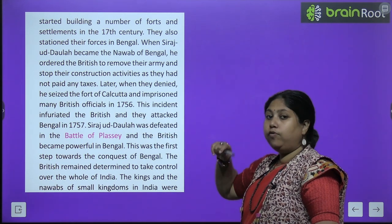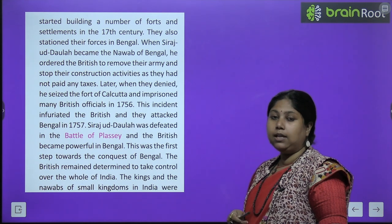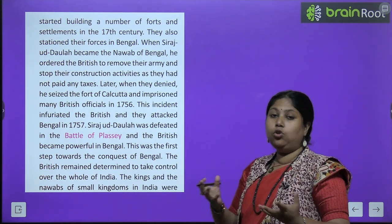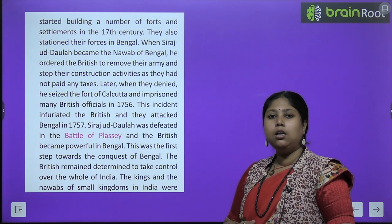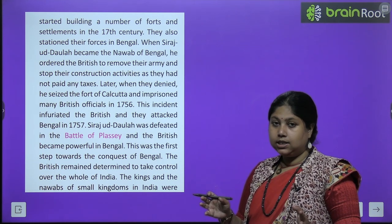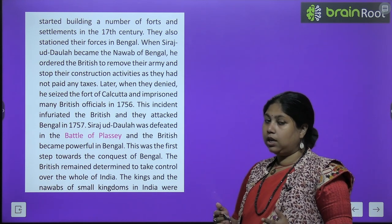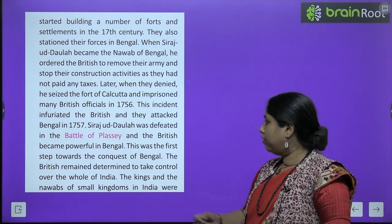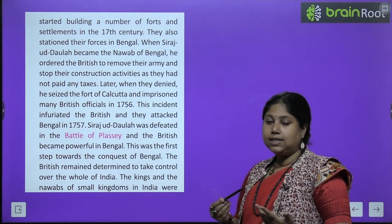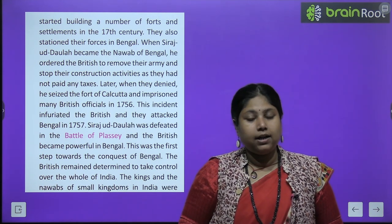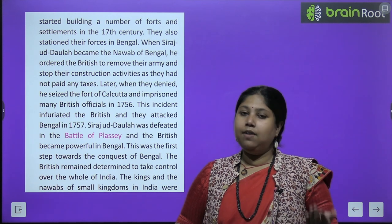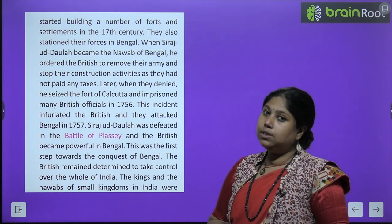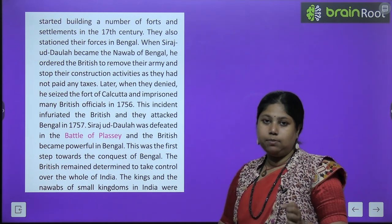Siraj ud-Daulah seized the fort the British were constructing and jailed those who disobeyed him. The British felt that as long as Siraj remained, he would expose their schemes, so removing him became very necessary. They attacked Bengal in 1757. In the first battle, Siraj won, but when the British attacked again, Siraj was defeated and Bengal came under British control.